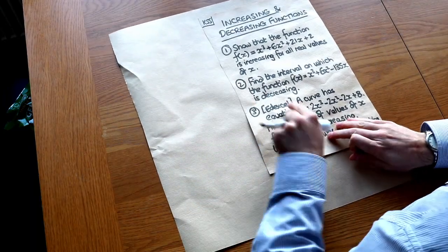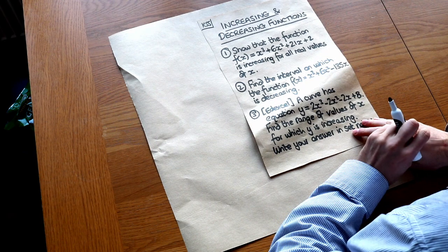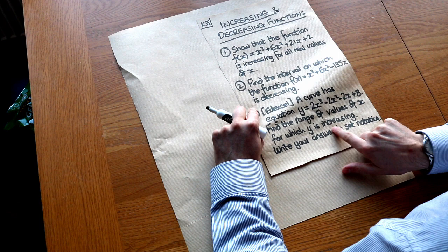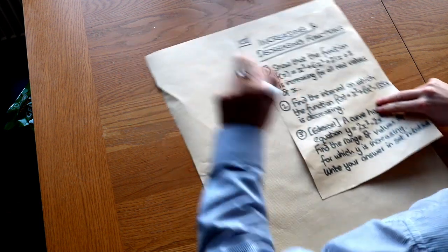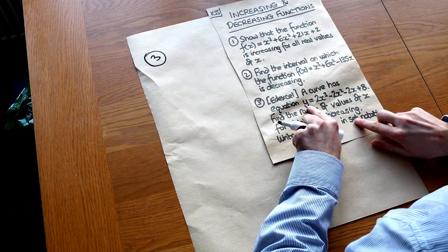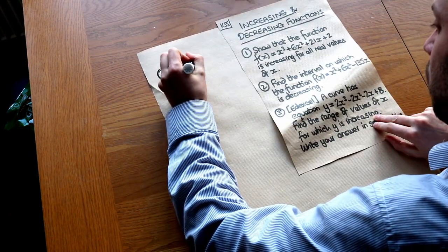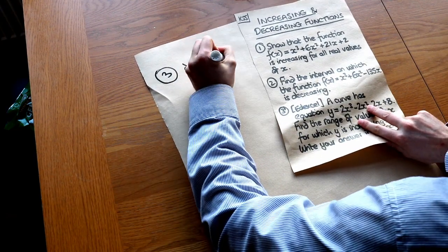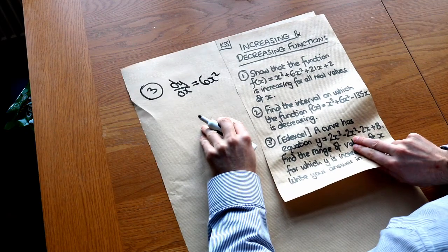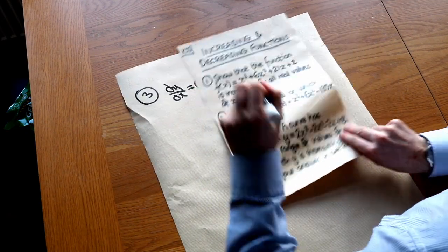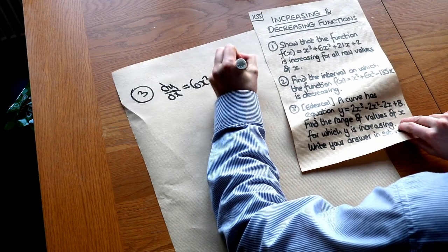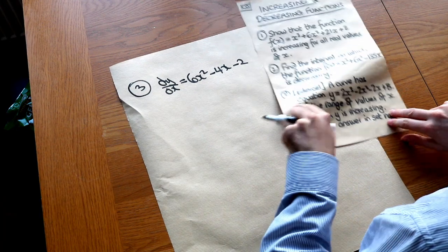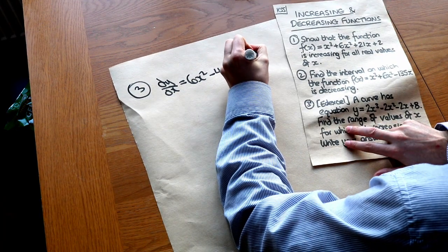One more example — an actual exam question. A curve has equation y = 2x³ − 2x² − 2x + 8. Find the range of values of x for which y is increasing. Write your answer in set notation. We differentiate to find dy/dx: 2x³ differentiates to 6x², −2x² differentiates to −4x, and −2x differentiates to −2. Since we want where y is increasing, the gradient must be greater than or equal to zero.